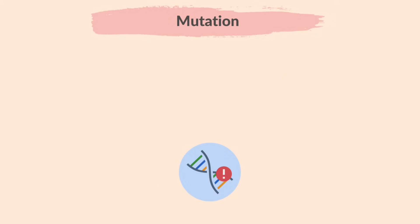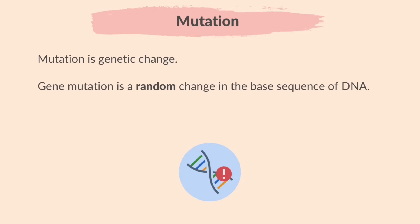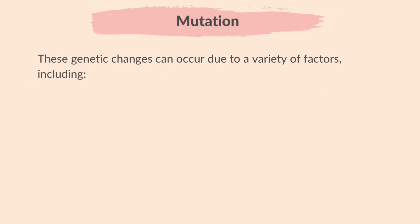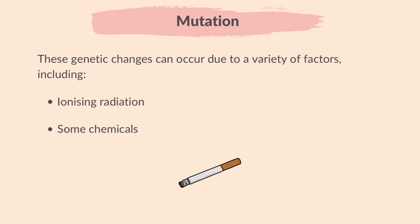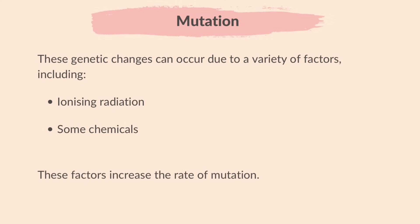Let's move on to mutation. Mutation is genetic change. Gene mutation is a random change in the base sequence of DNA of an organism. These genetic changes can occur due to a variety of factors, including ionizing radiation such as X-rays and gamma rays, which can cause mutation by breaking DNA strands or altering the sequence, and exposure to some chemicals such as tar in tobacco. These factors increase the rate of mutation.